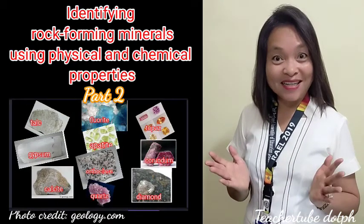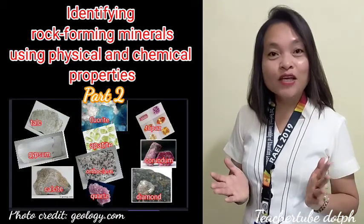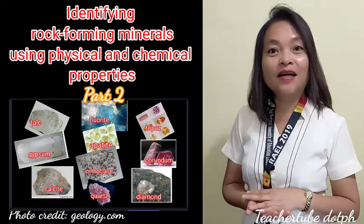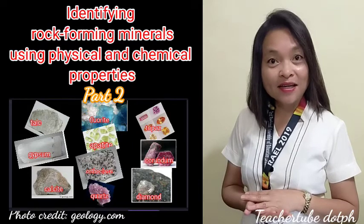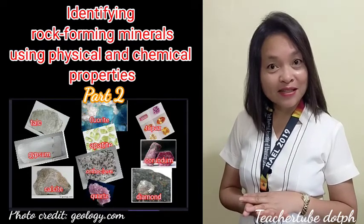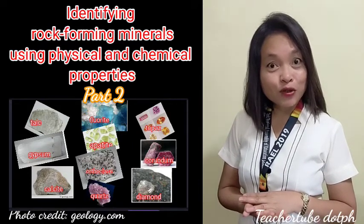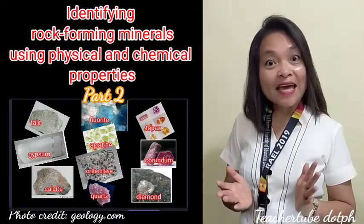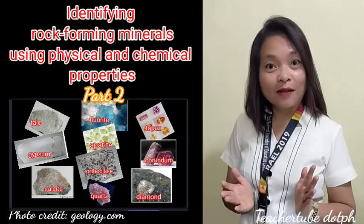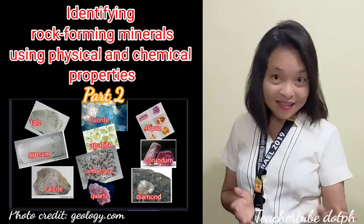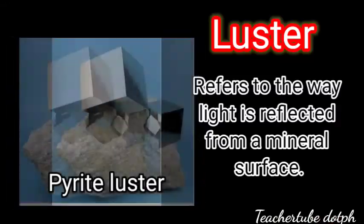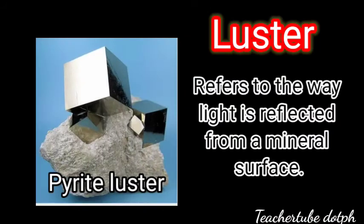Hi everyone. Today you're going to be learning about identifying rock-forming minerals using their physical and chemical properties. Let's get started. We have luster — it refers to the way light is reflected from a mineral surface.